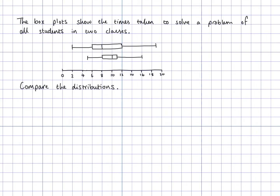Here is some information about the times taken to solve a problem for all students in two classes — class A and class B. We've got two box plots with a scale showing time. Lower times are better because a faster time is better. Class A has someone that's done it in maybe two minutes, with the rest of the data in the box plot. What we need to do is compare the distributions — which class did better, which class performed more consistently, and so on.